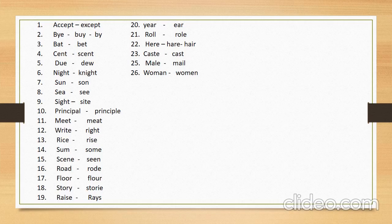Number four: 'cent' — used for money. In England, in the context of currency, cent is used in the form of coins. Its similar in sound word is 'scent' (S-C-E-N-T), meaning perfume — itar.